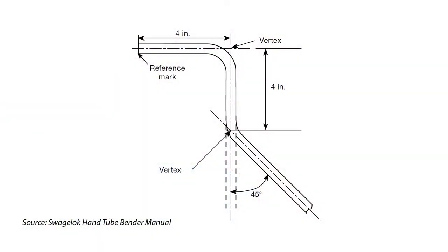When making bends, it may be helpful to sketch the layout. This drawing shows a layout with a 90 degree bend, 4 inches from the end of the tube, and a 45 degree bend, 4 inches from the center or vertex of the first bend. The vertex is where the tube center lines that form the angle intersect.